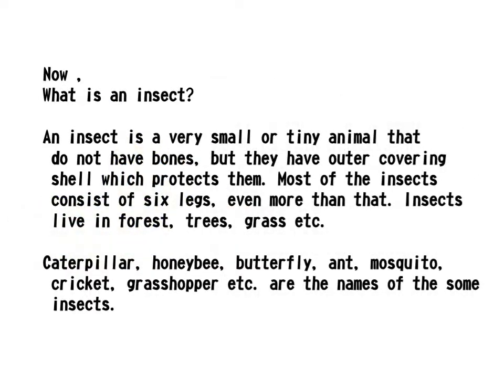Now, what is an insect? An insect is a very small or tiny animal that does not have bones, but they have an outer covering shell which protects them. Most insects consist of six legs, even more than that. Insects live in forests, trees, grass, etc.